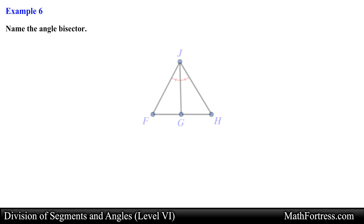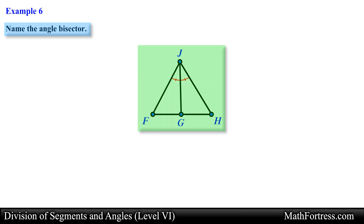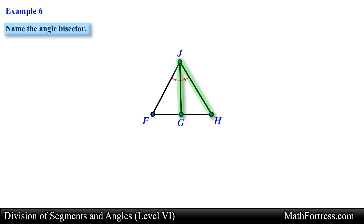Let's take a look at the next example: Name the angle bisector. In this problem we are asked to determine the angle bisector. Looking at the diagram we see that angle FJG and angle HJG have matching arc marks, meaning these two angles are congruent. Notice that Ray JG divides these two angles, so Ray JG is the angle bisector. And this is our final answer.